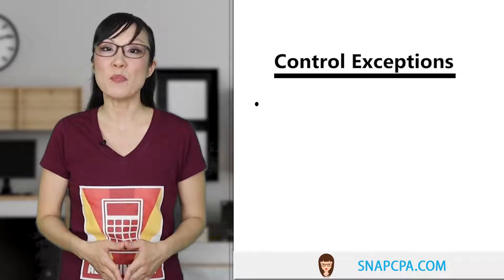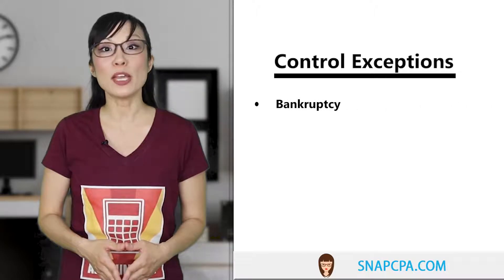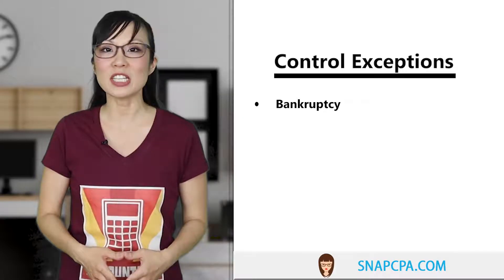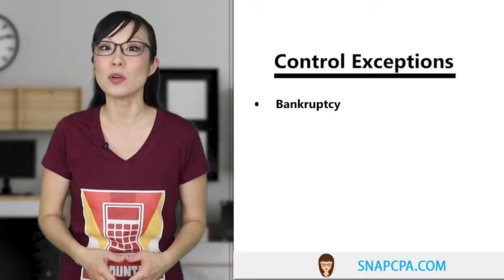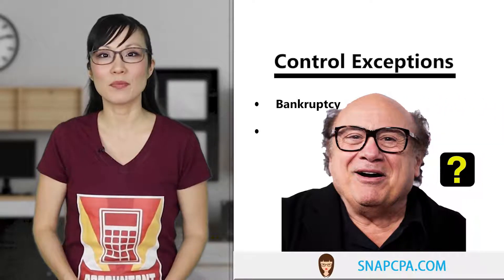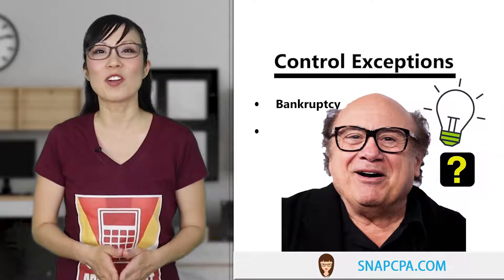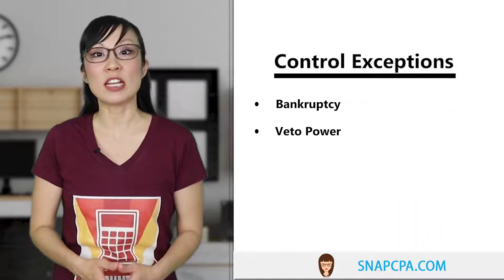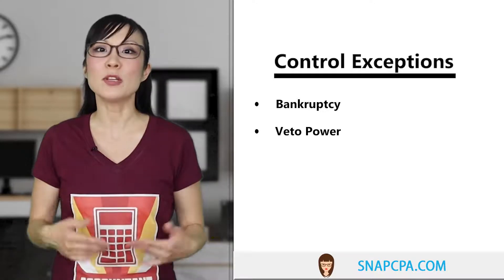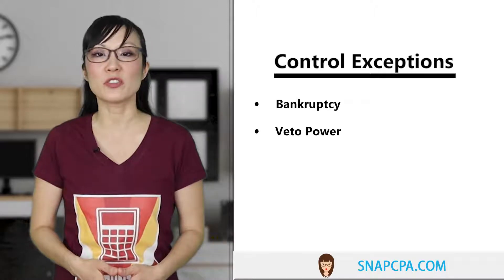For example, when a subsidiary is in bankruptcy. Once a company goes into bankruptcy, as a general matter, all major business decisions require approval from the bankruptcy court. In that case, it's not the majority shareholder that makes the decisions — it's the bankruptcy court. Another example is when someone has veto power — the kind that gives you power over a vote. If the majority shareholder wins the vote but there is another shareholder with the power to veto that decision, then the majority shareholder doesn't really have control, because every decision is subject to that other shareholder's veto power.